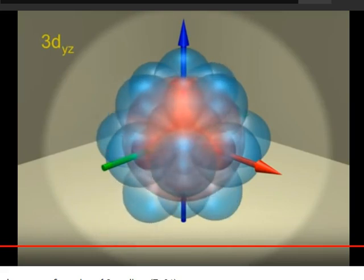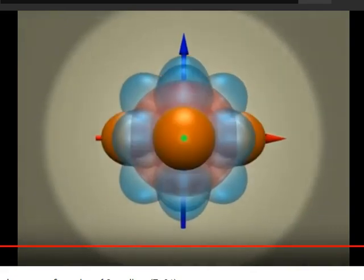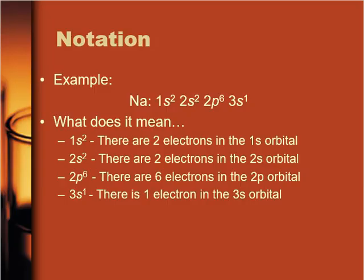After the 3d orbitals, we can then fit 4p orbitals and 5s orbitals and so on and so forth — it just goes on and on. But the most important thing I really want you to see here is that the bigger the number, the further away from the nucleus it becomes, and as it does so, what we're getting is overlapping regions of probability.